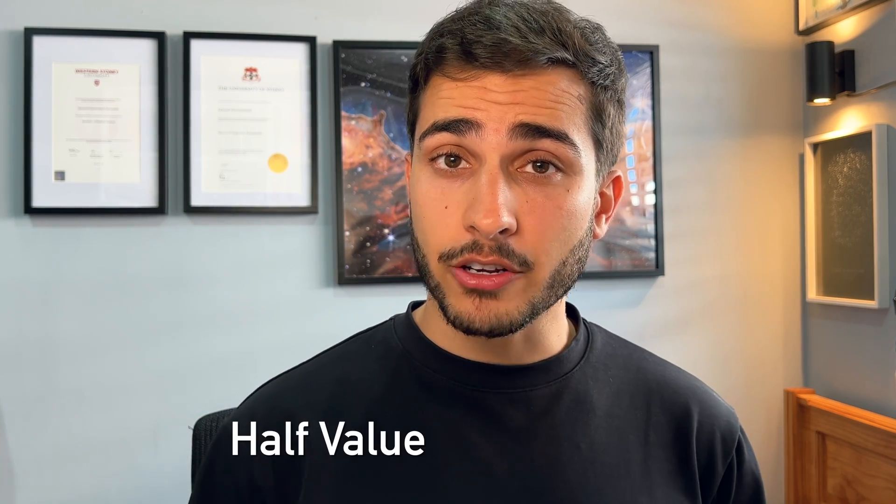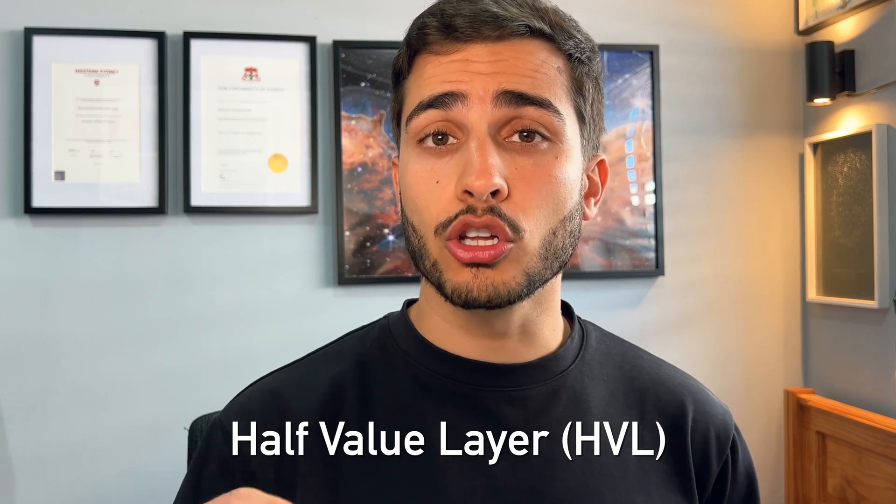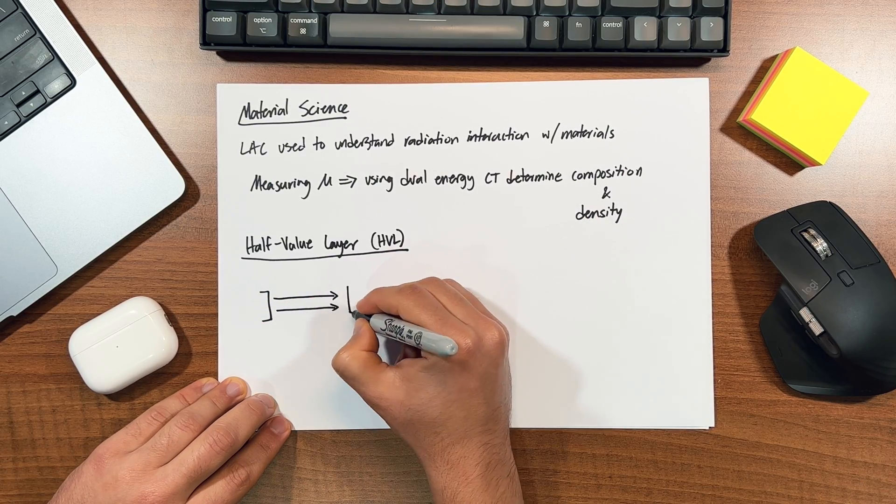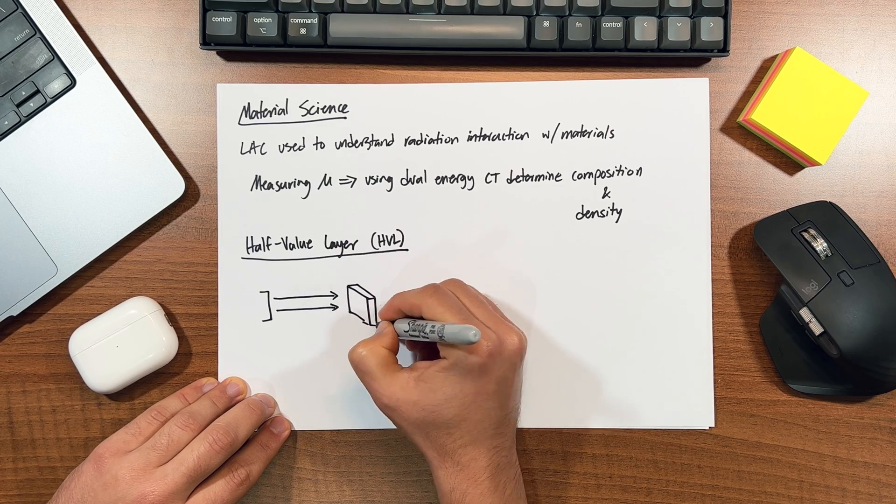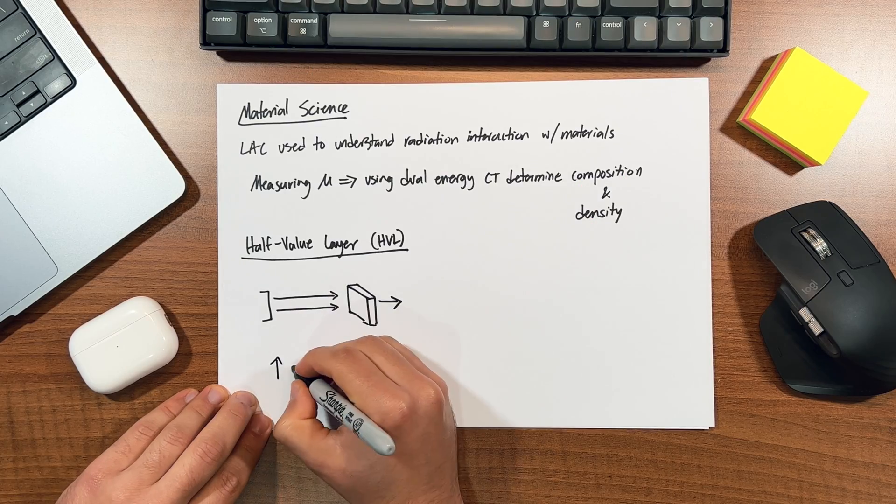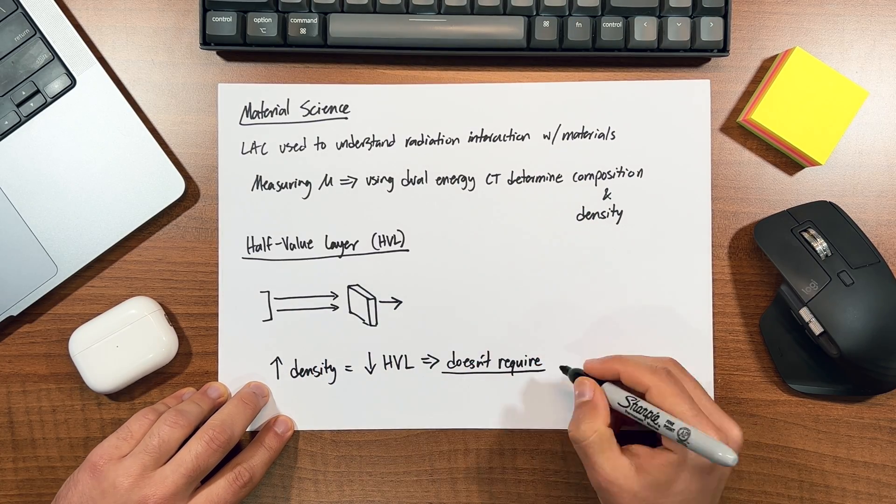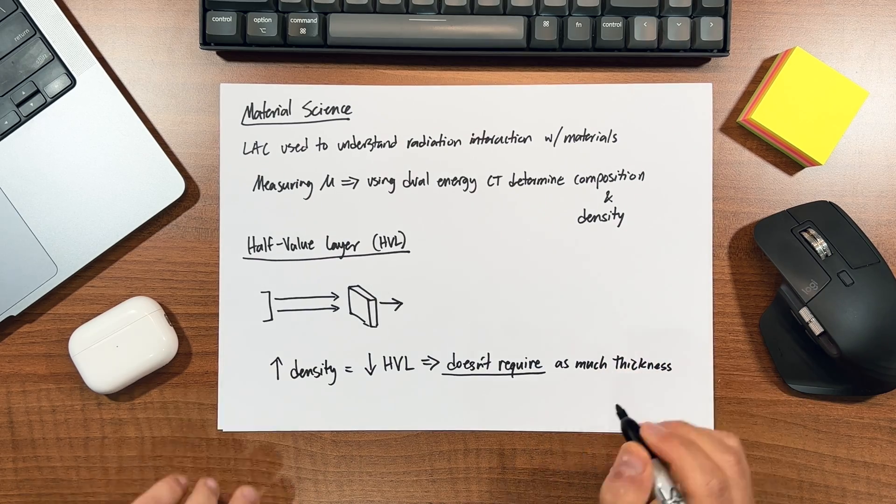An interesting point is that the half value layer, or HVL for short, is closely related to this concept. And as the name suggests, it's referring to the thickness of material that will reduce the x-ray intensity by 50% or half. And of course this level of thickness will be different depending on the material, that is a denser material will have a lower HVL than a lighter one because it doesn't require as much thickness to reduce the x-ray intensity by half. At some stage I'll make a separate video on this which you can find below.